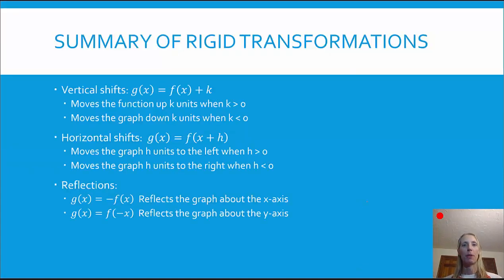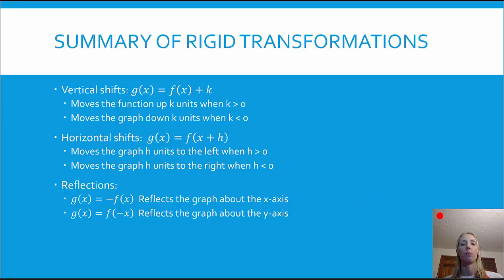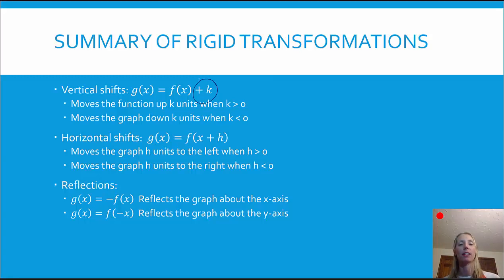We have two types of transformations. The rigid transformations, where the shape stays the same — it's just the shape either moves around the graph or it might flip upside down. We have three types of rigid transformations. We can have vertical shifts, that's where the graph moves up or down. That's when we have our new function and there's something being added to the original function — a plus something outside of the function. If that thing being added is positive, it's going to move the graph up. If it's negative, it's going to move the graph down.